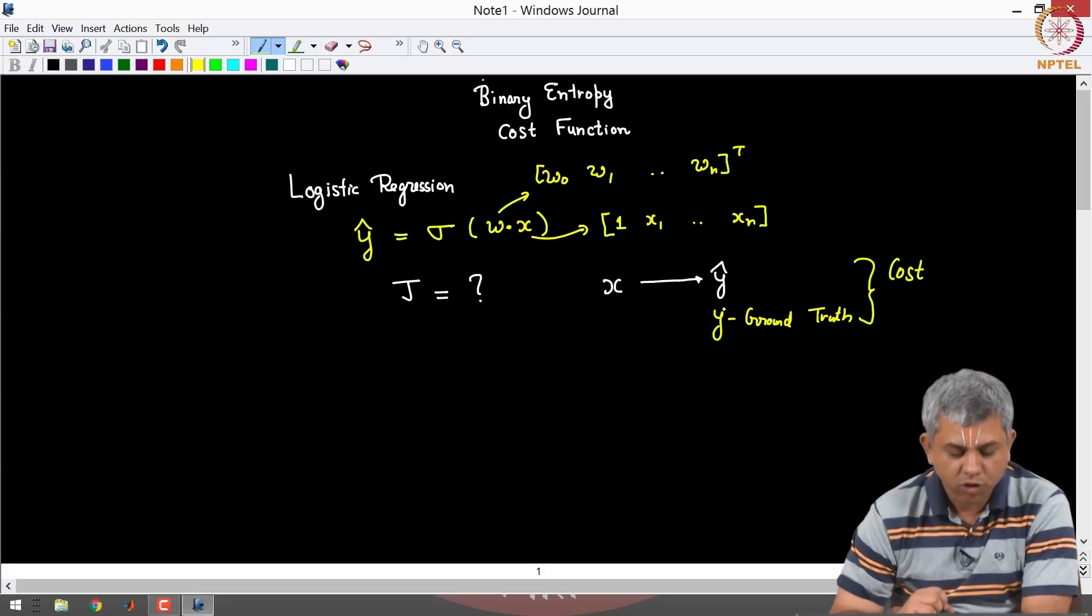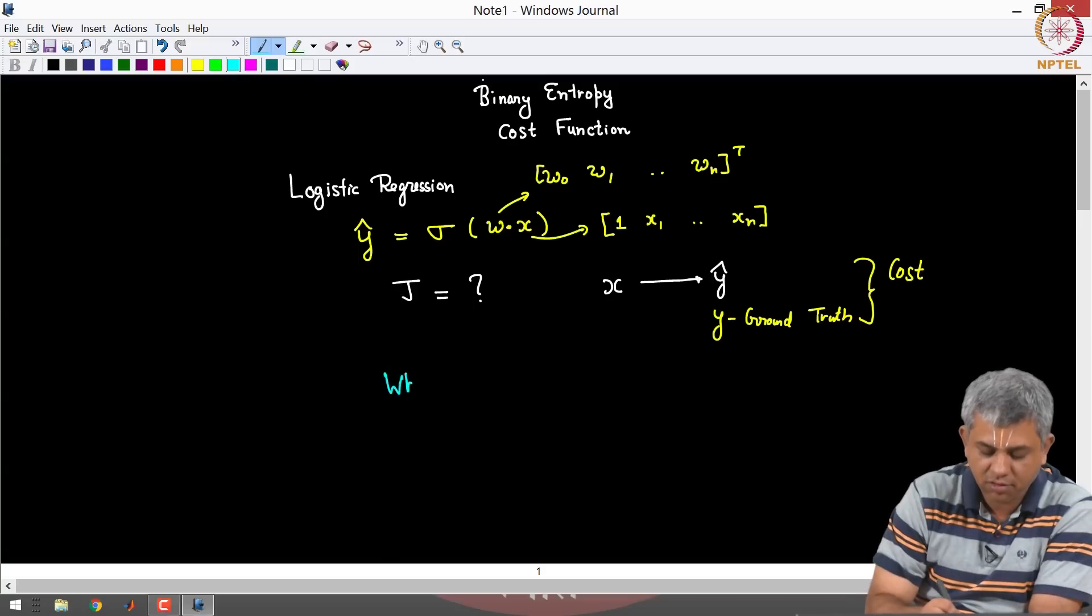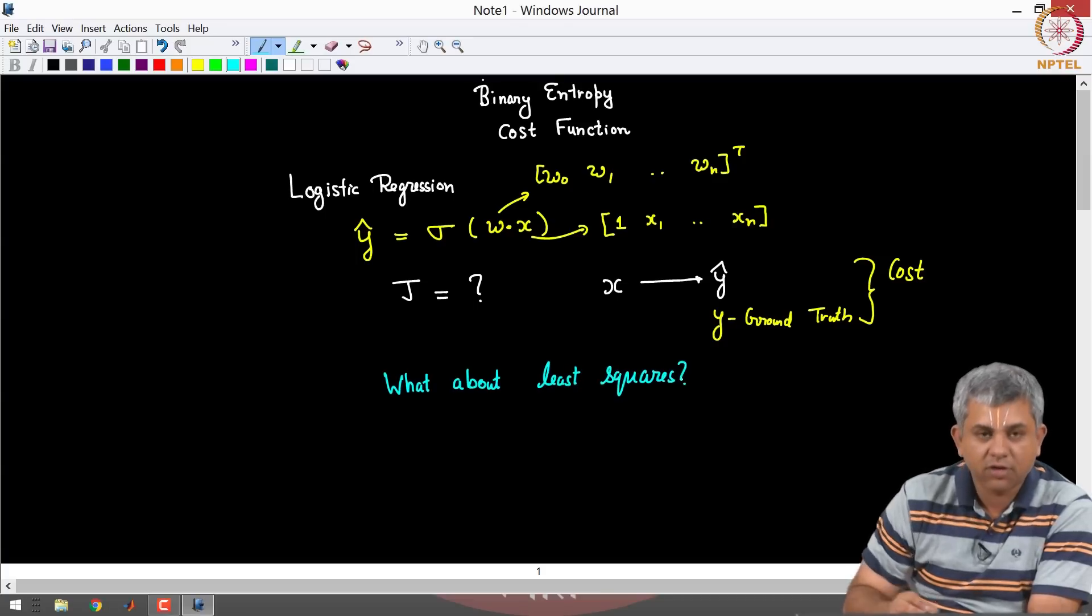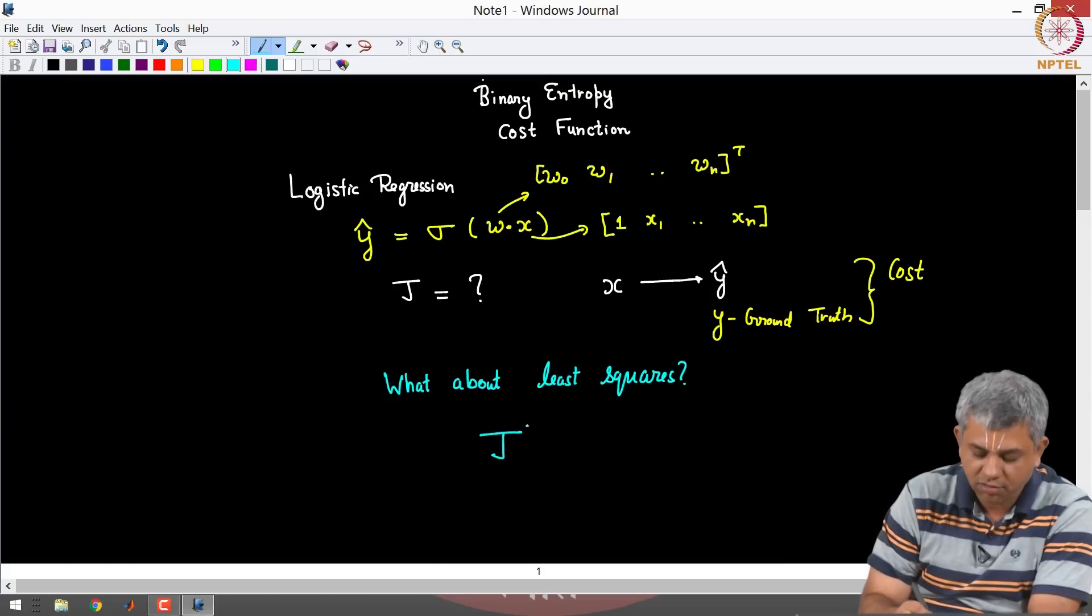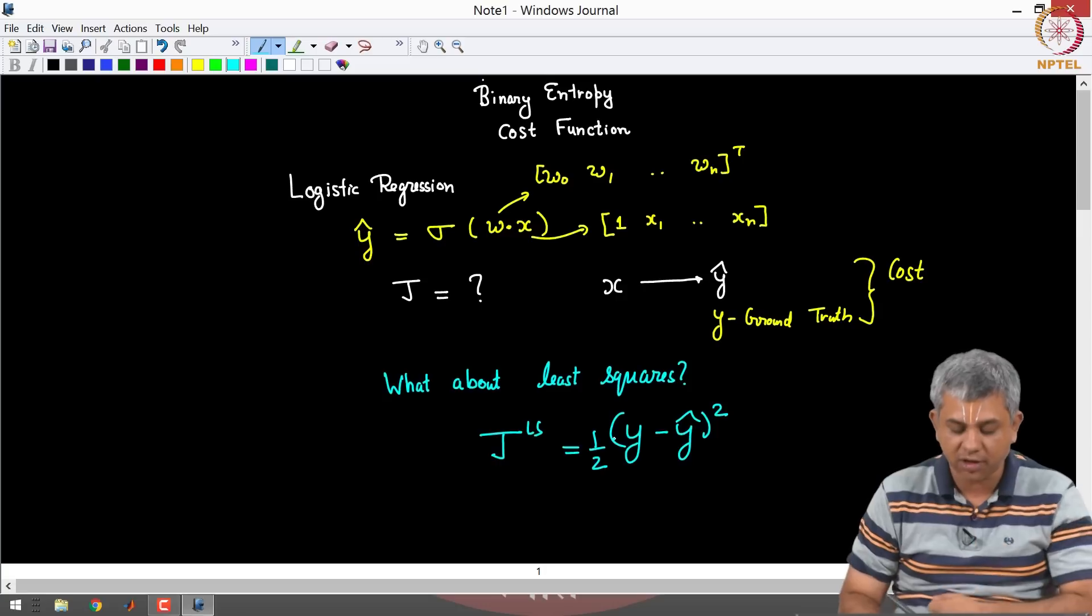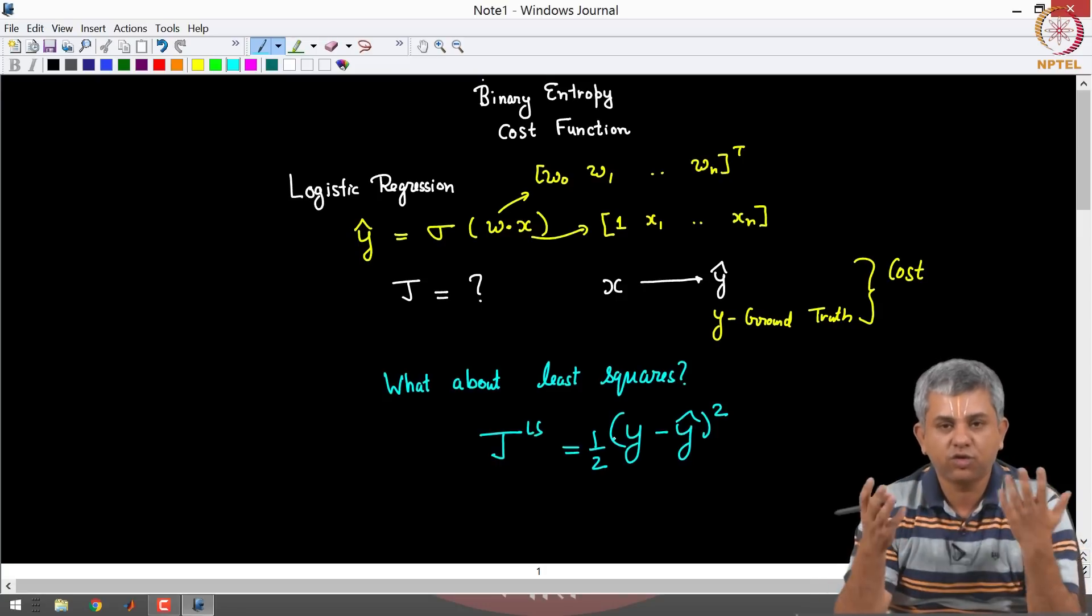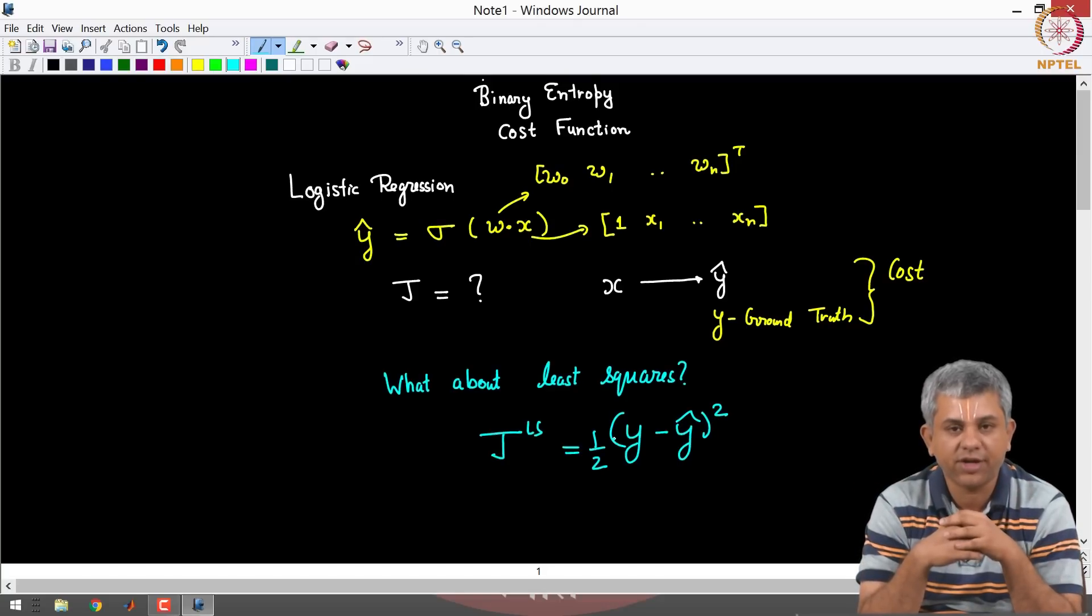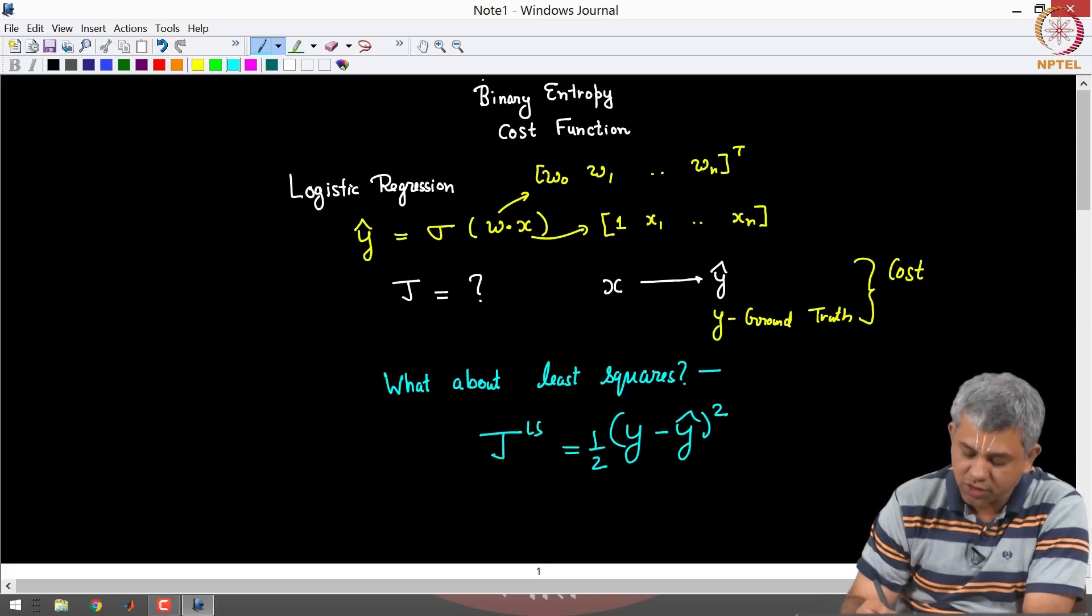So now why not use the least squares cost function. The least square cost function was simply Y minus Y hat squared divided by 2. Of course I am taking this for one particular incident or one particular example. The usual thing was we take the sum of all the examples and take an average, that is what we did for linear regression. So why not use this for classification.